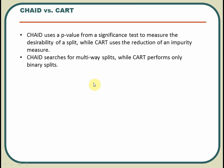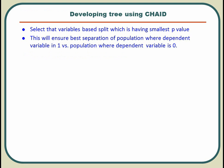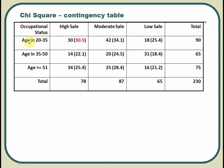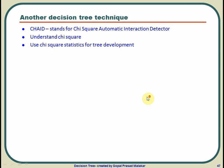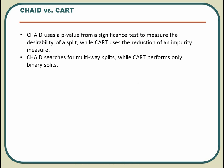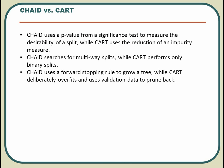CHAID searches for multi-way splits — not just binary splits — whereas CART by definition only searches for binary splits. CART will have a left node and a right node only. CHAID, on the other hand, can have three or more nodes at one place, whereas CART must have only binary nodes.